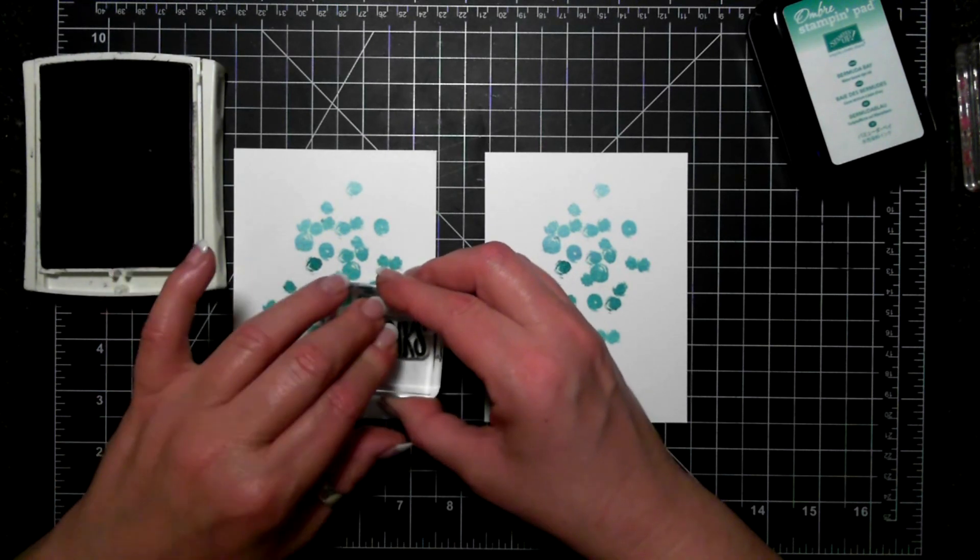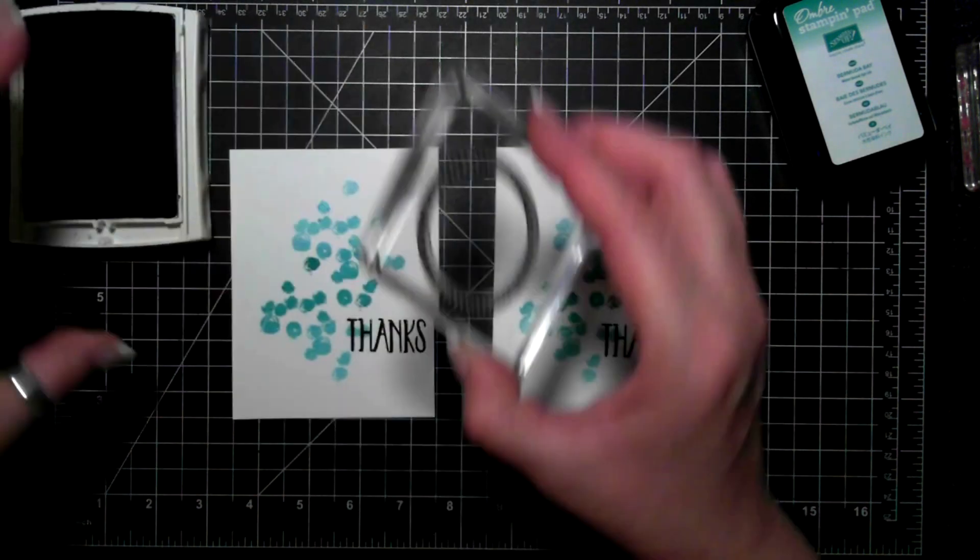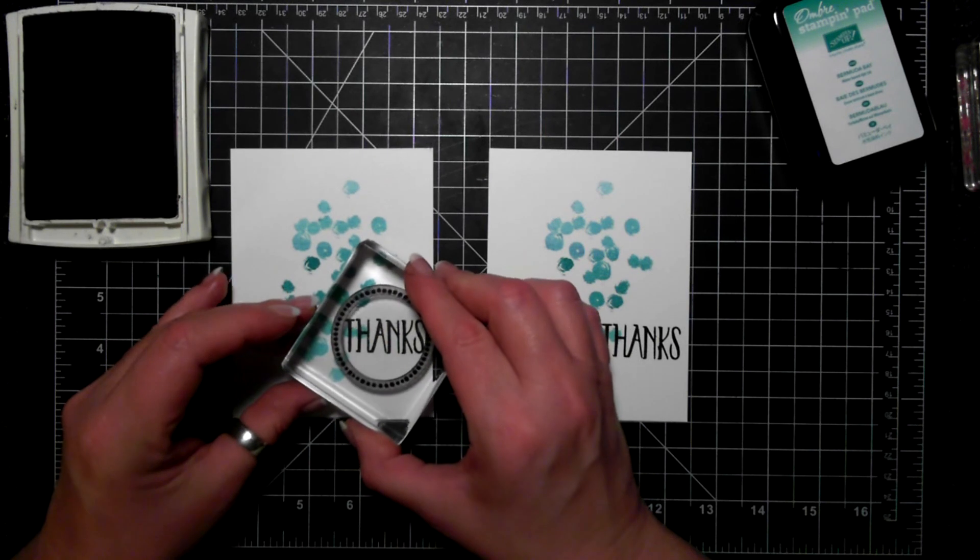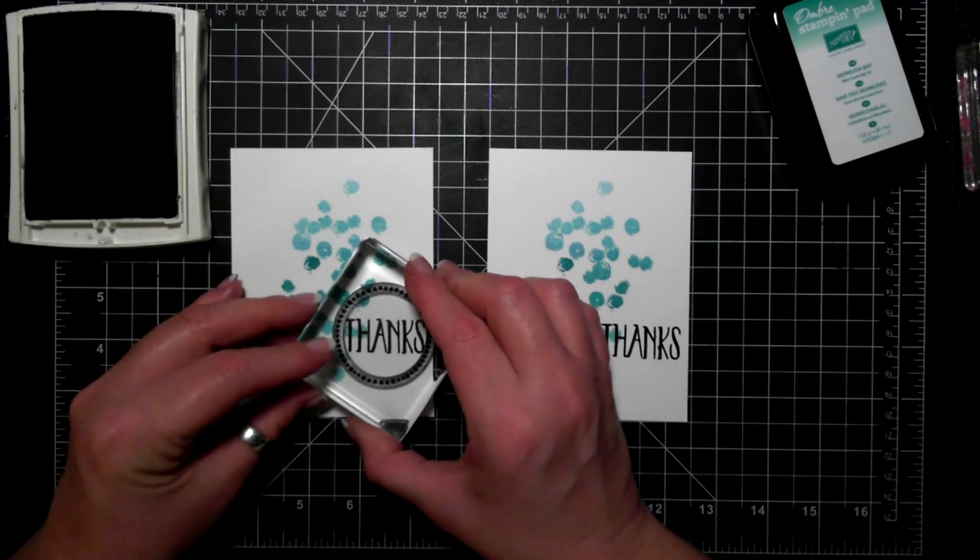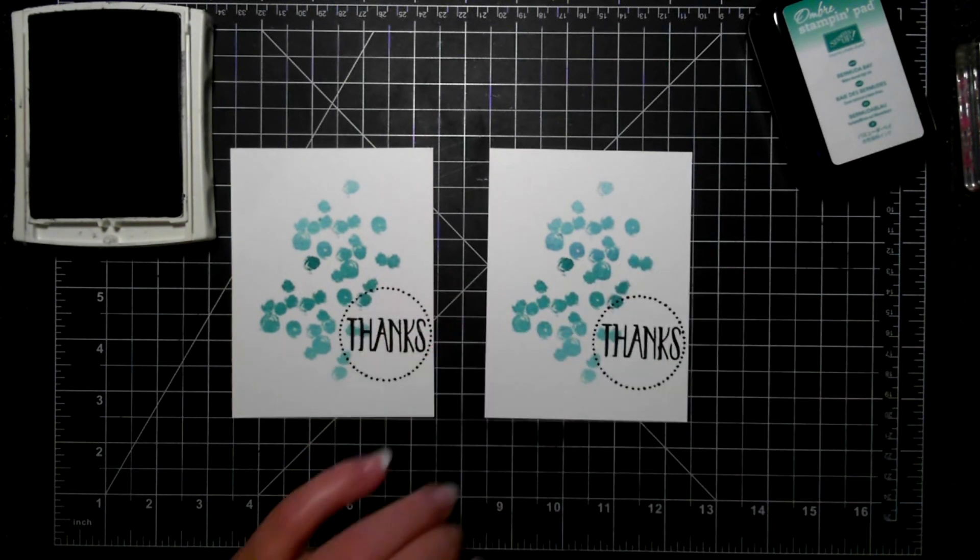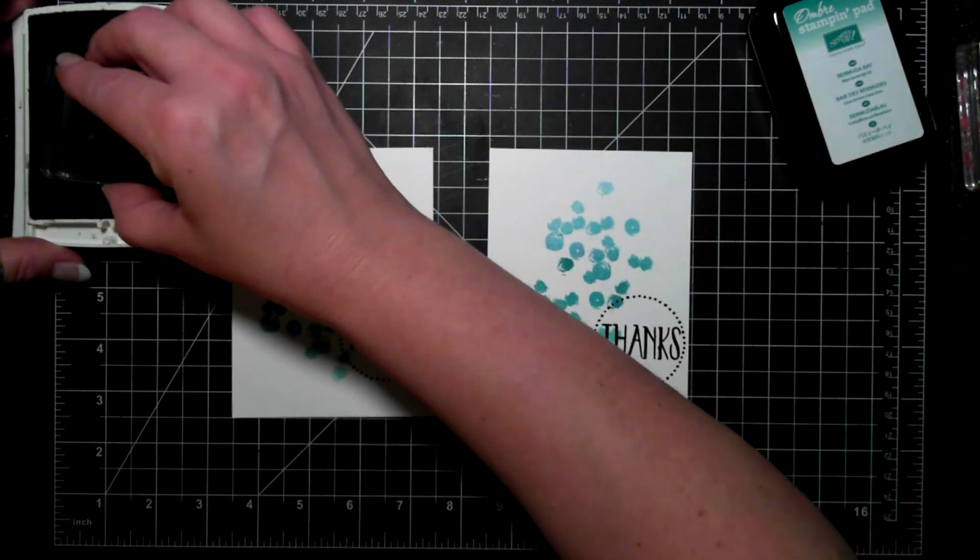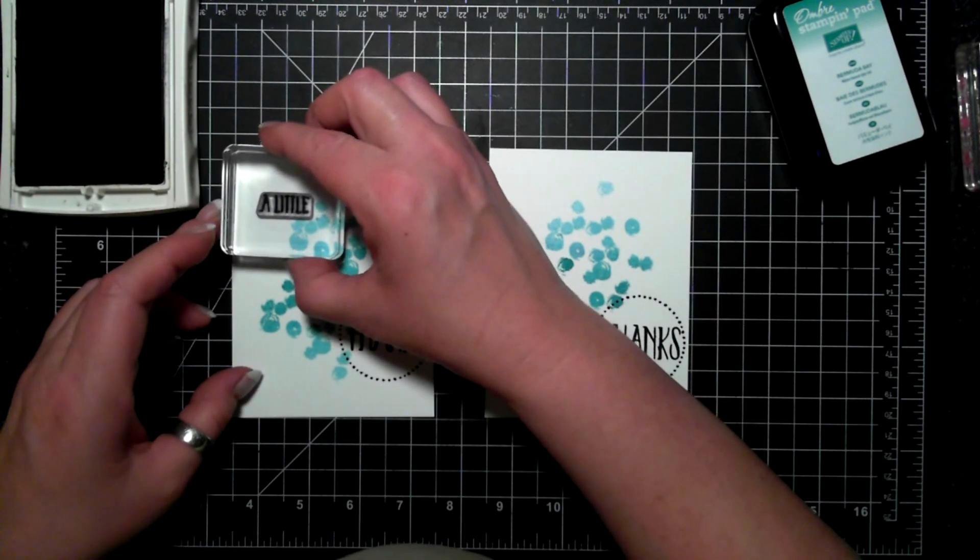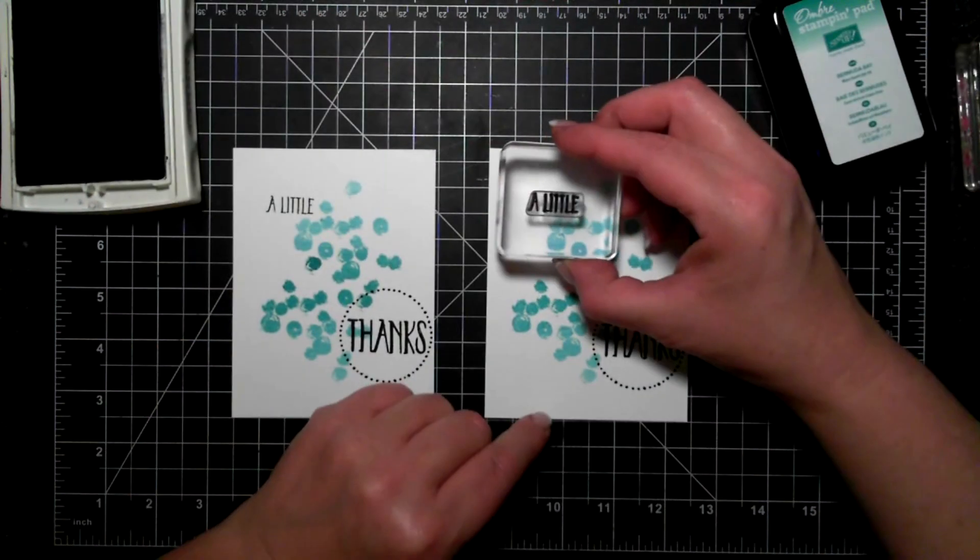So I'm coming in with my archival black ink pad and just using these sentiments from the perfectly wrapped stamp set and this is just a very simple one layer card. It holds a lot of punch though because the ombre ink is the focal point there.